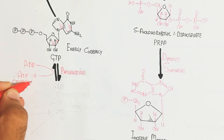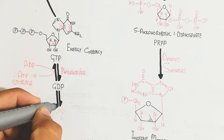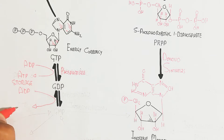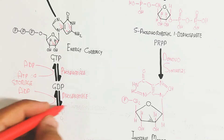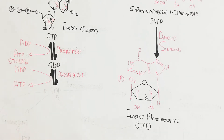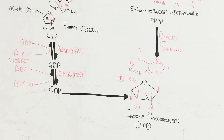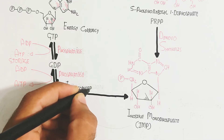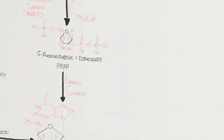GTP is converted by a phosphatase enzyme in the presence of ADP to produce ATP as an energy storage form. The guanosine diphosphate (GDP) is further catabolized, and the GTP conversion into GDP represents catabolism. Similarly, guanosine monophosphate (GMP) can interconvert back to inosine monophosphate.